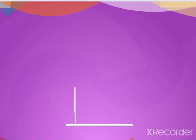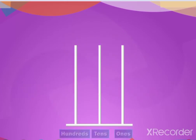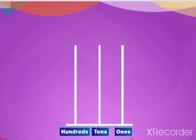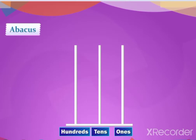Let us start with three-digit numbers. Three-digit numbers have digits at three different places: ones, tens, and hundreds. Now let us look at the abacus below.